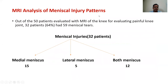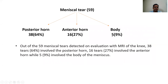Analysis of meniscal injury patterns. Out of 50 patients evaluated by MRI for painful knee joint, 32% had 59 meniscal tears. In 32 patients, 15% had only medial meniscal injuries, 5% only lateral meniscal pathology, and 12% had both medial as well as lateral meniscal pathology. Out of 59 meniscal tears, 30 tears involved the posterior horn, 16 involved the anterior horn, and 5 involved the body of the meniscus.